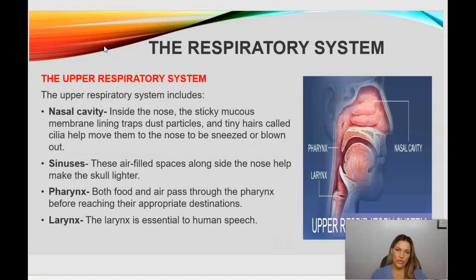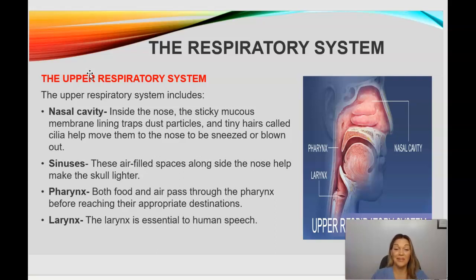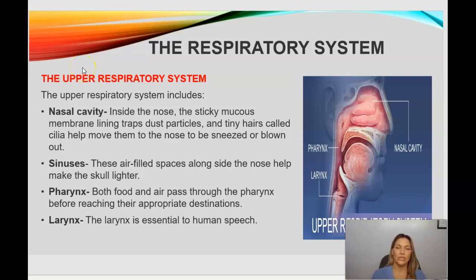Taking a closer look at the upper respiratory system: it includes the nasal cavity. Inside the nose, there's a sticky mucosa membrane lining that helps to trap dust particles, dirt, and sometimes insects. These tiny hairs called cilia then help to move them to the nose to be sneezed or blown out. We also have sinuses — air-filled spaces along the side of the nose that help to make the skull lighter.